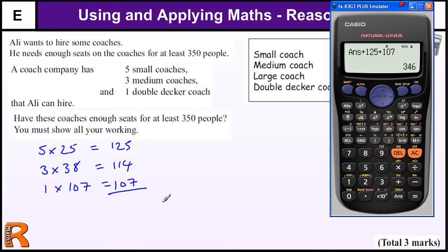We get 346. So no, we would be 4 short. We're 4 short of 350, and that's all we need to say.